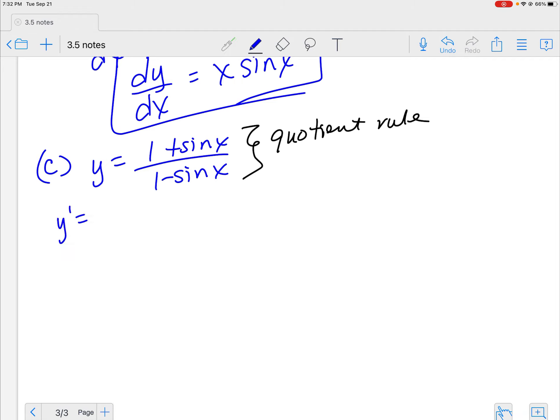So y prime is equal to the derivative of the top. The derivative of a constant is still 0. That doesn't change. But the derivative of sine is what? Cosine. Good, you're learning. Times the bottom, because I haven't touched it yet, minus the top times the derivative of the bottom. That's a constant at 0. But don't forget this negative sign right here. So that comes along as negative cosine x. This is a negative times that negative in front. Just make that positive.